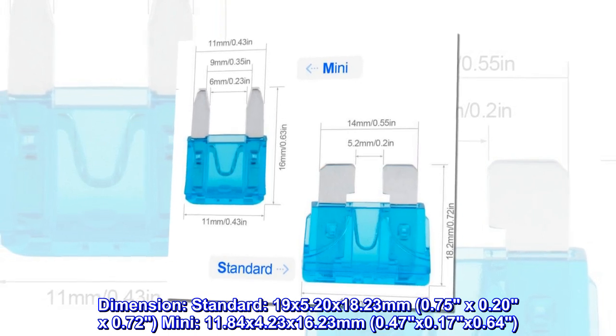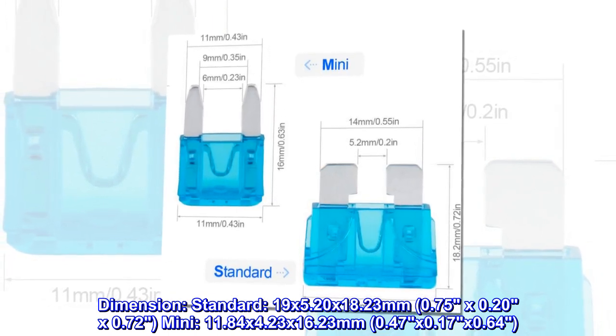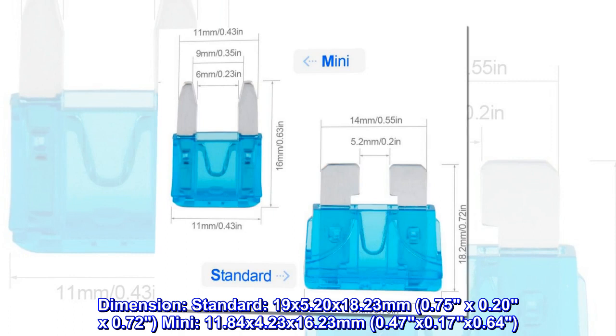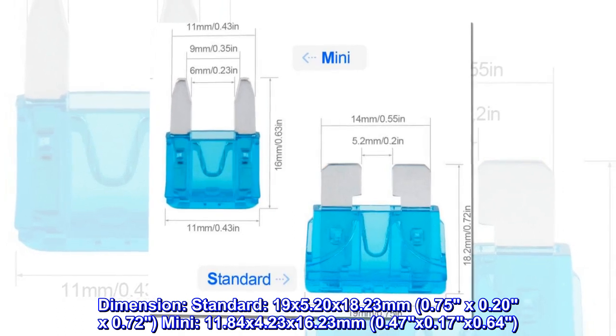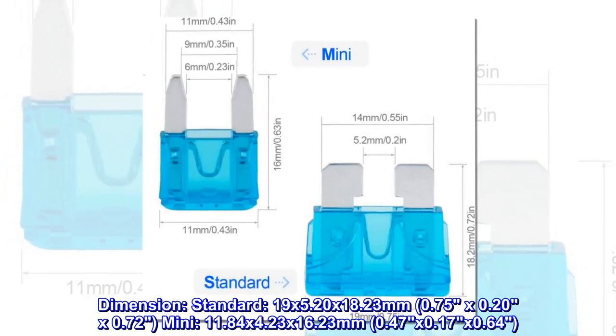Mini: 11.84 by 4.23 by 16.23 millimeters, 0.47 by 0.17 by 0.64 inches.